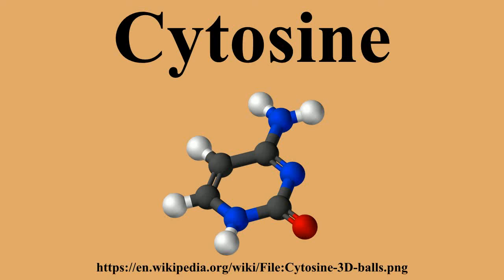Cytosine is one of the four main bases found in DNA and RNA, along with adenine, guanine, and thymine. It is a pyrimidine derivative, with a heterocyclic aromatic ring and two substituents attached.